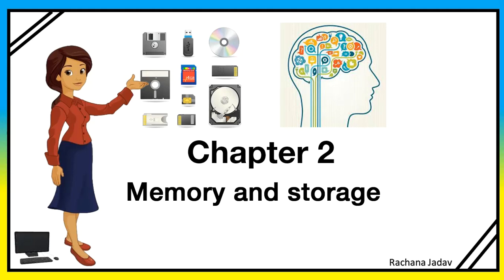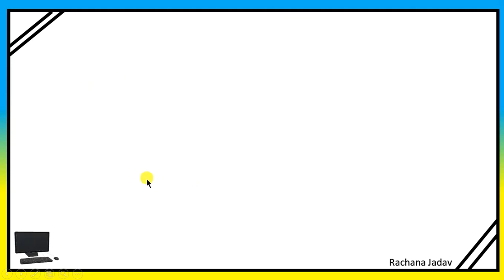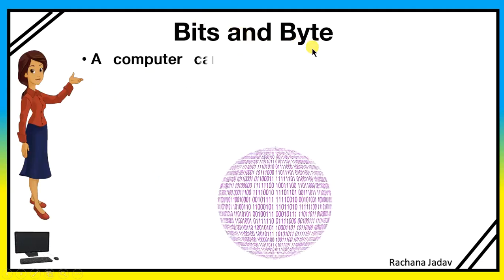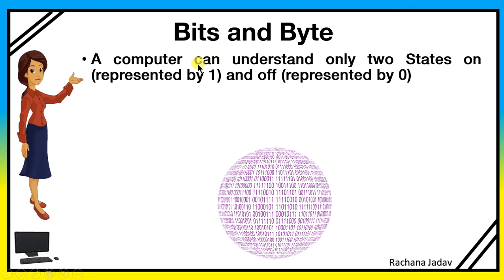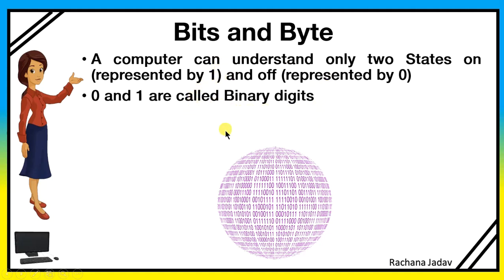CPU is called the brain of the computer because it stores many things — jaise aapke dimaag mein bohot saari cheezein store rehti hain, waise computer mein bhi storage hota hai. Computer understands only the language of zero and one. Zero aur one ko samajta hai — zero means off and one means on, like switch on and switch off. These are called binary digits.